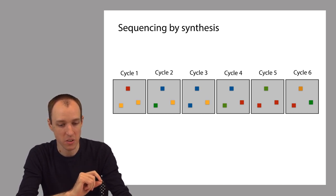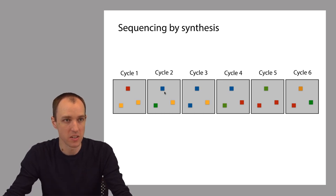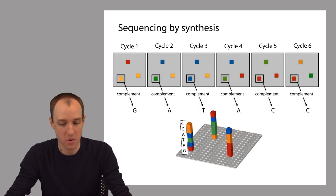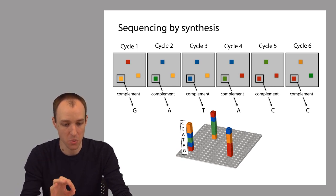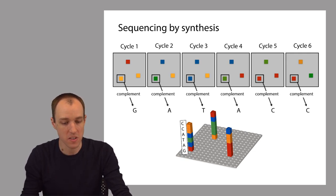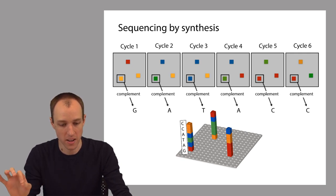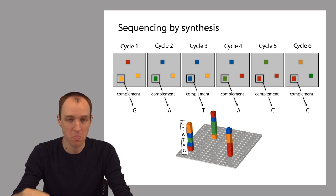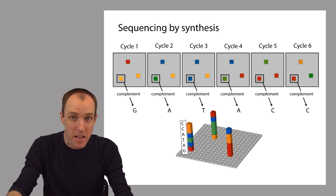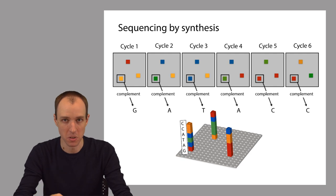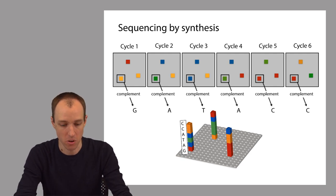So if you look at these pictures, but look at just a particular template, for example, we can look at just the template that's in the lower left corner. Then you can read off the series of colors that were observed for that particular template. If we concentrate on this lower left template and follow that template through all of the six photographs that we have here, we see a series of colors. Orange, green, blue, green, red, red. And then if we take the corresponding bases and take the complements of those bases, then we get the sequence of our template strand, like you can see in the picture at the bottom.